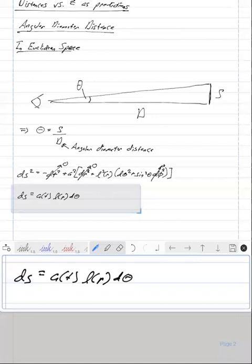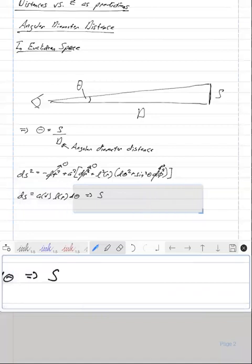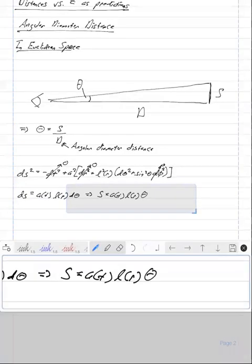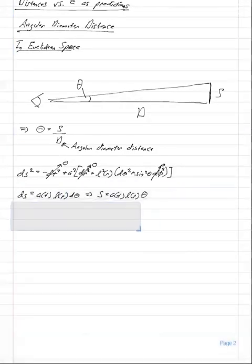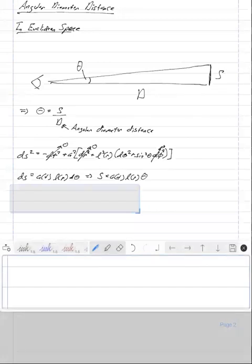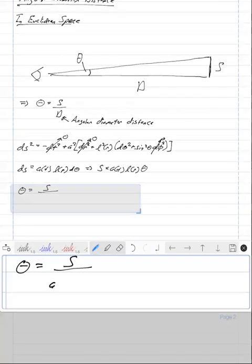So now we're left with ds is equal to a of t times l of r d theta. And if we do an integral in the theta direction, we have that the proper size of this object is equal to a of t times l of r times theta. And let's rewrite this. So up above, we have theta equals the proper size of the object divided by something. So this would be theta is equal to s, the proper size divided by a of t, l of r.